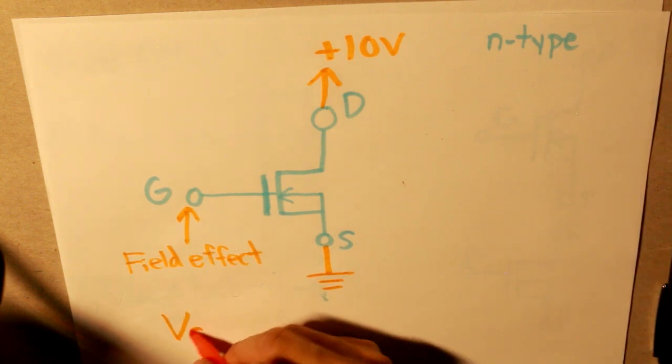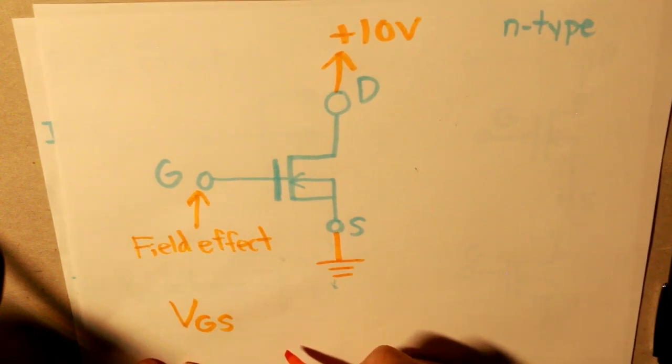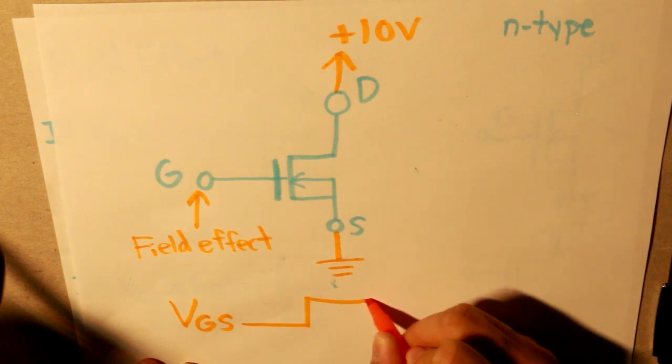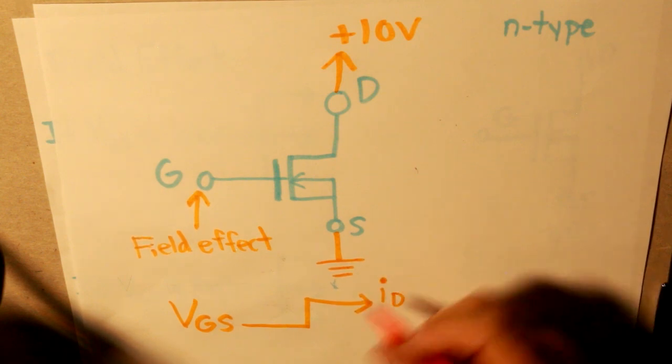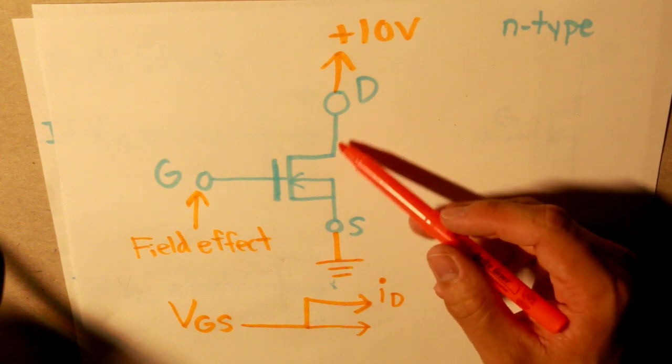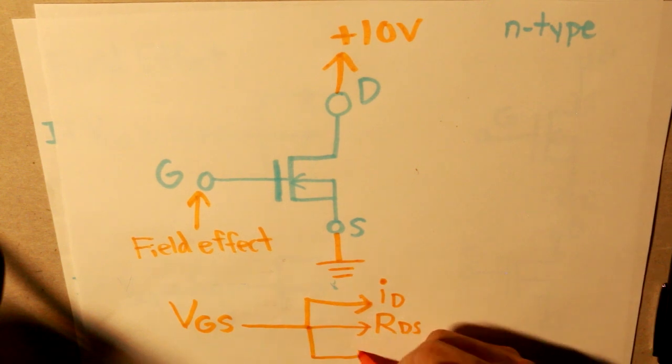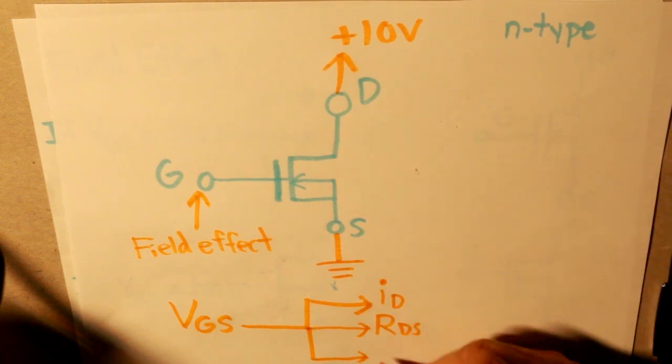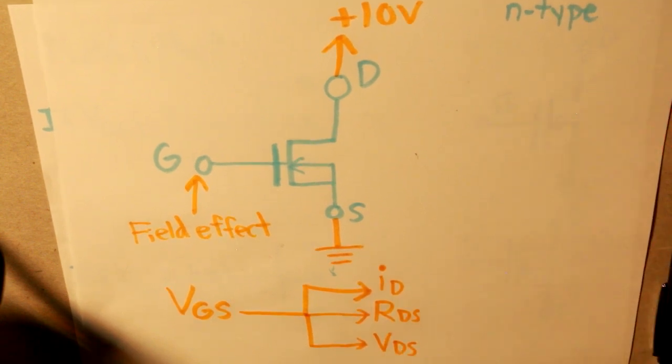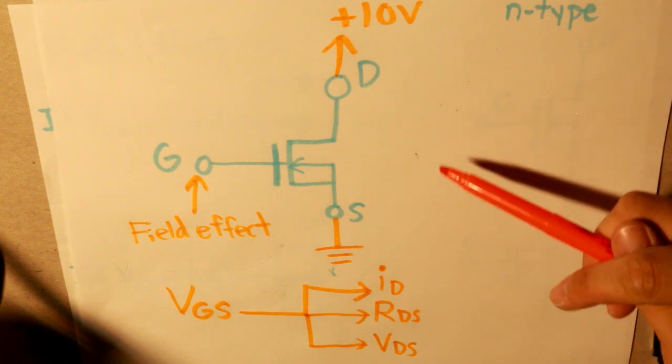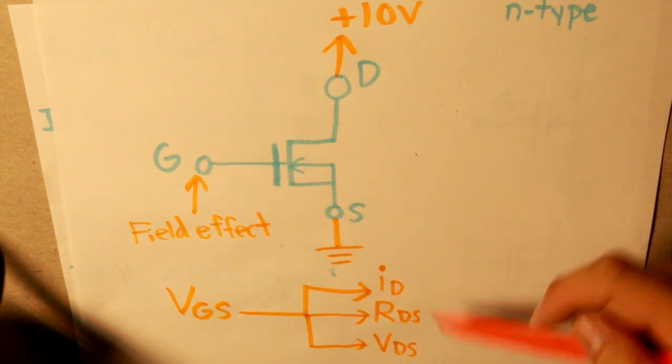So, what that basically means, I'm going to write it down right here, that it can affect these three variables. So the first thing that I've already mentioned is the current, and we can write that as ID. The second is the resistance between DS, and we call that RDS. And the third is the voltage across the drain and the source, VDS. And that's how the field effect works in this situation, where the voltage gate source could affect these three variables.